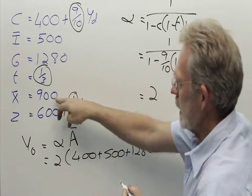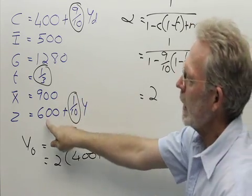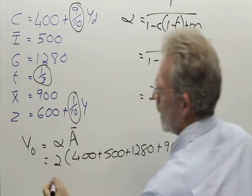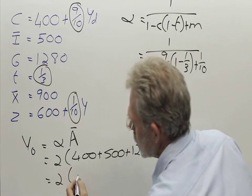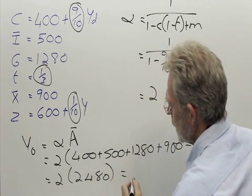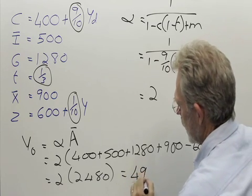plus autonomous exports, 900, minus autonomous imports, 600. If we add these together, we get 2,480 times 2, so the equilibrium level of income is 4,960.